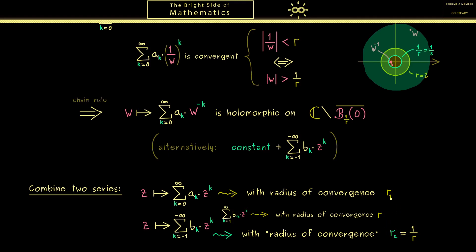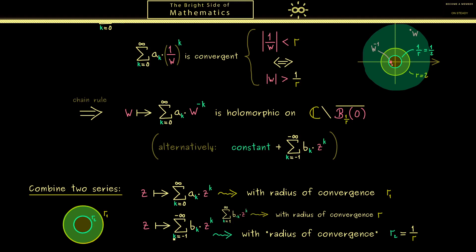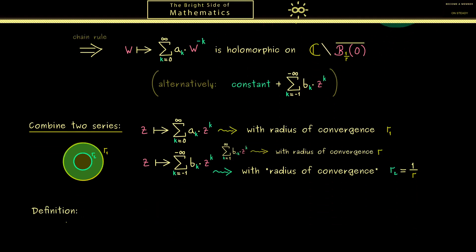So in summary we have two series with two corresponding numbers r1 and r2, both lying between 0 and infinity (inclusive). The visualization in the complex plane gives us two circles and two different domains of convergence. Depending on the values of r1 and r2 they could overlap in a ring. This is exactly what a Laurent series is — let's put this into a formal definition. Formally, we write the Laurent series as a series going from minus infinity to plus infinity.